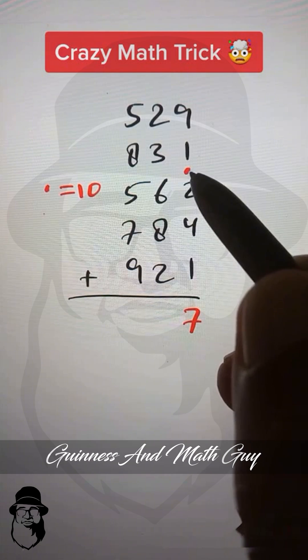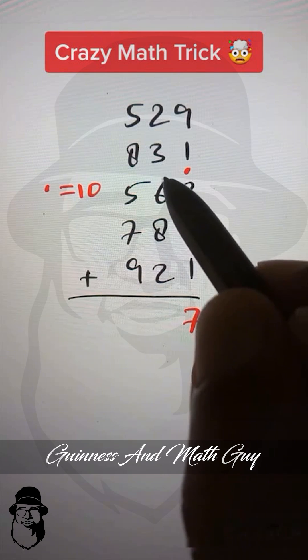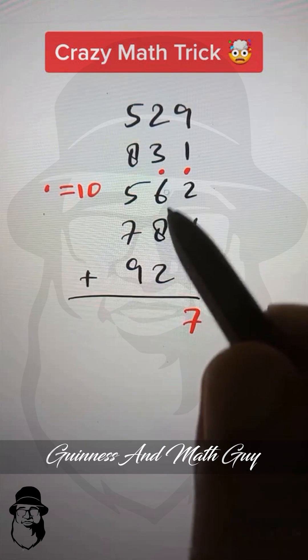...just look at the previous column, how many dots we have. Only one. So 1 plus 2 is 3, 3 plus 3 is 6. Then 6 plus 6 is dot 2. We put dot, we have 2. 2 plus 8...